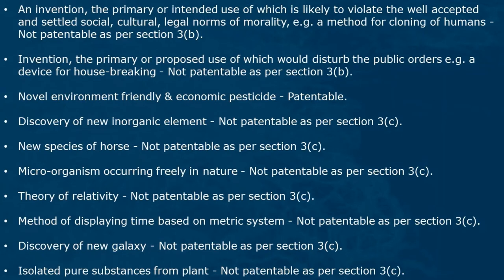An invention the primary or intended use of which is likely to violate well-accepted and settled social, cultural, or legal norms of morality — e.g. a method for cloning of humans — is not patentable as per section 3b. An invention the primary or proposed use of which would disturb public order — e.g. a device for housebreaking — is not patentable as per section 3b. A novel environment-friendly and economic pesticide is patentable.